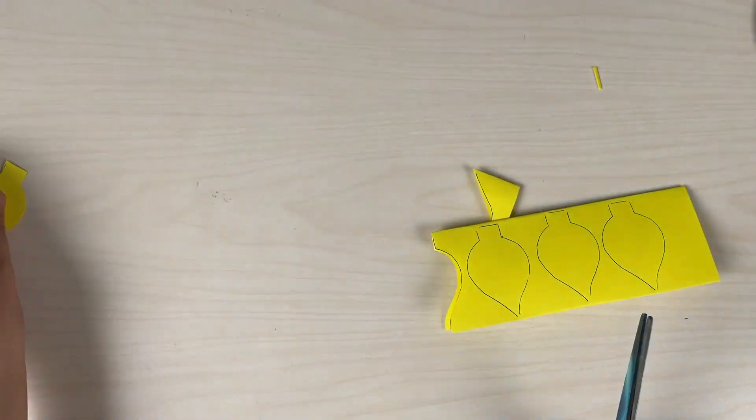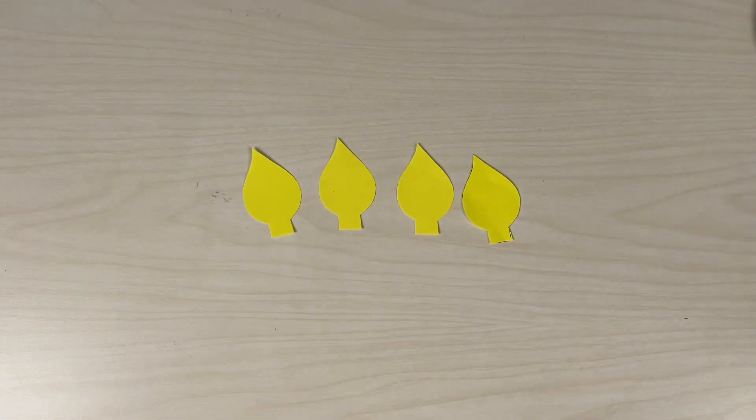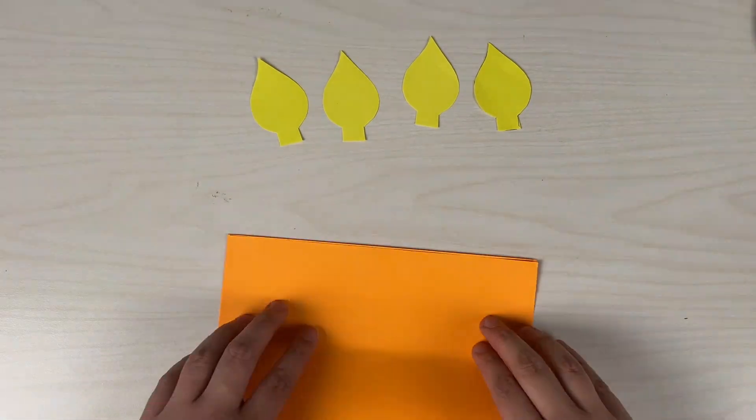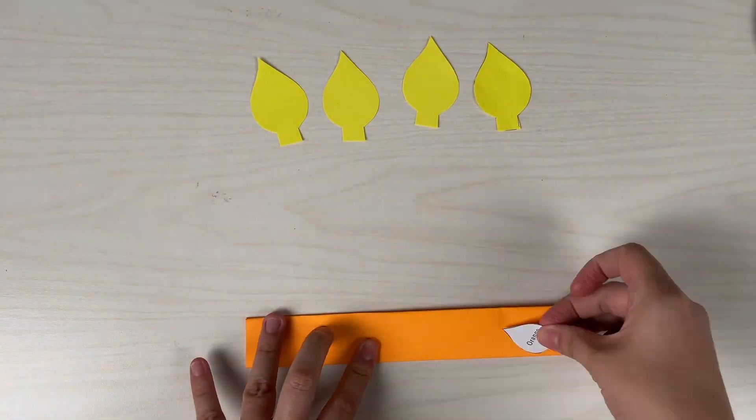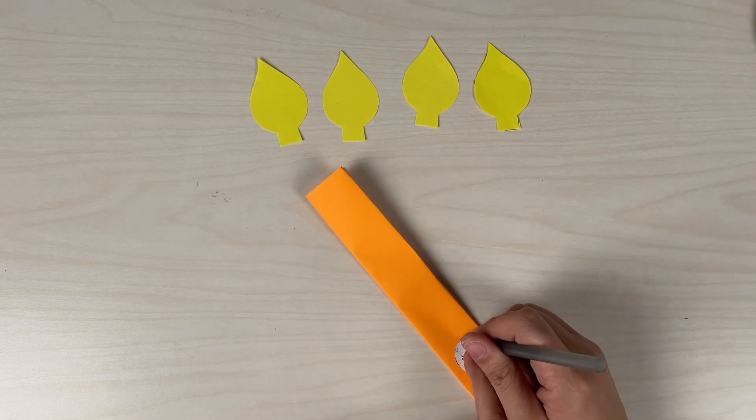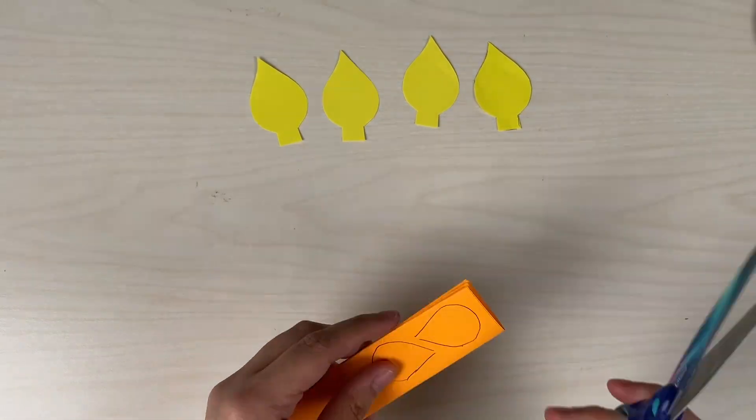So for example, this cut will make me four flames. So instead of just printing this out on yellow sheet of paper, we can just trace and cut. I'm doing the same for the orange paper, but I'm gonna use the medium flame for this time.